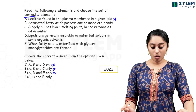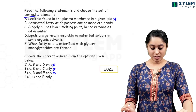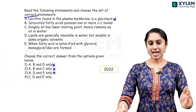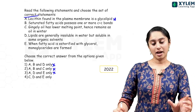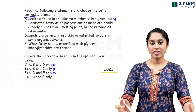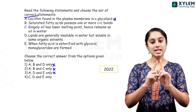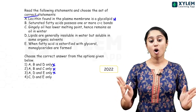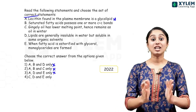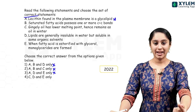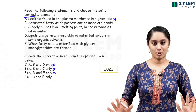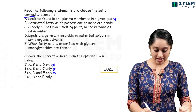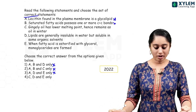Saturated fatty acids possess one or more C=C double bonds — that statement is being evaluated. Actually, saturated means only single bonds, meaning the carbon is fully bonded and you cannot add any more. You cannot break the bond to add anything else. When you have a C-C single bond, we say saturated. So saying saturated possesses one or more C=C double bonds is wrong.